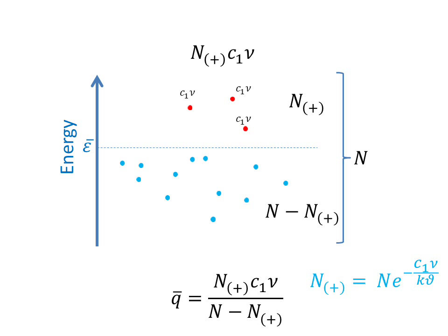From Boltzmann's law applied to energy, the number n sub plus of oscillators having energy greater by c sub 1 times ni than the average energy epsilon bar is as shown. Thus, we get the following after replacing n sub plus.